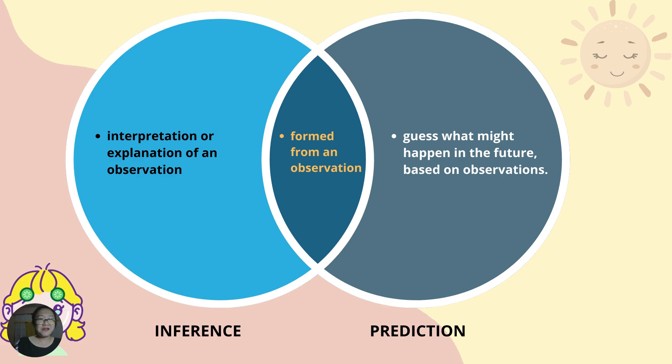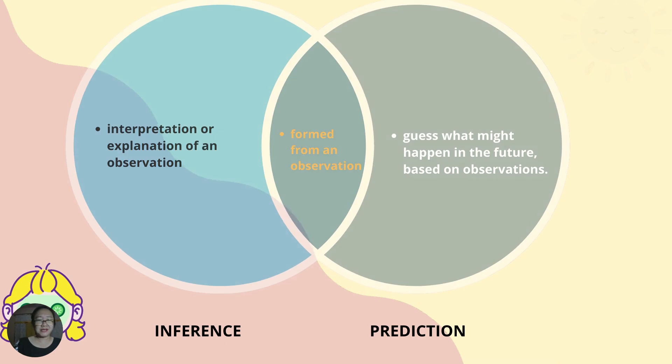Inference and prediction — what's the difference? In inference, it is an interpretation or explanation of an observation. While in prediction, you are making a guess on what might happen in the future based on your observation. Inference and prediction are both formulated from an observation, and they are both scientific process skills — specifically, basic process skills.